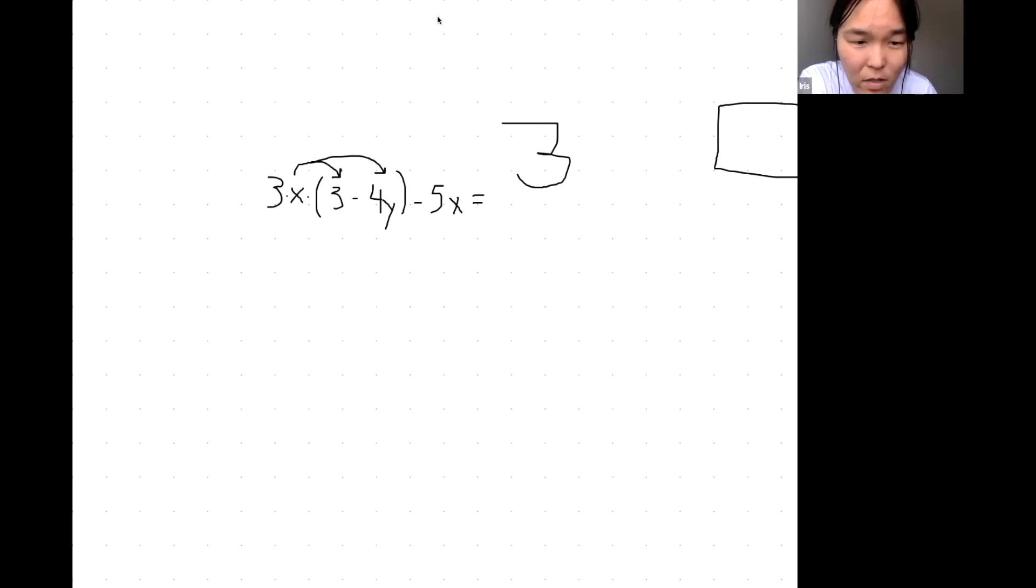3x times (3 minus 4y) has to be 3x times 3 plus 3x times negative 4y. This is the part where sometimes we drop the negative sign, so you have to be very careful that you don't forget the negative sign because it can change everything. Minus 5x. This becomes 9x, right? Because this 3, these guys multiply. And then here I multiply this 3 with negative 4, it becomes minus 12xy—numbers multiplying numbers, and then I have one x and I have one y. And then minus 5x.